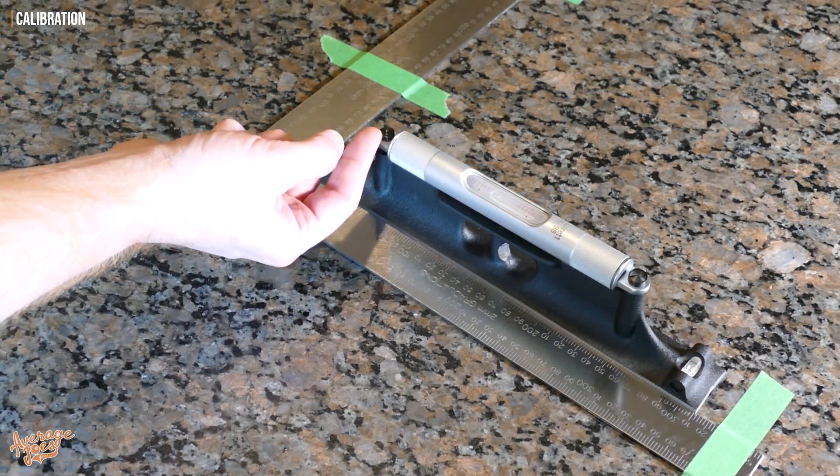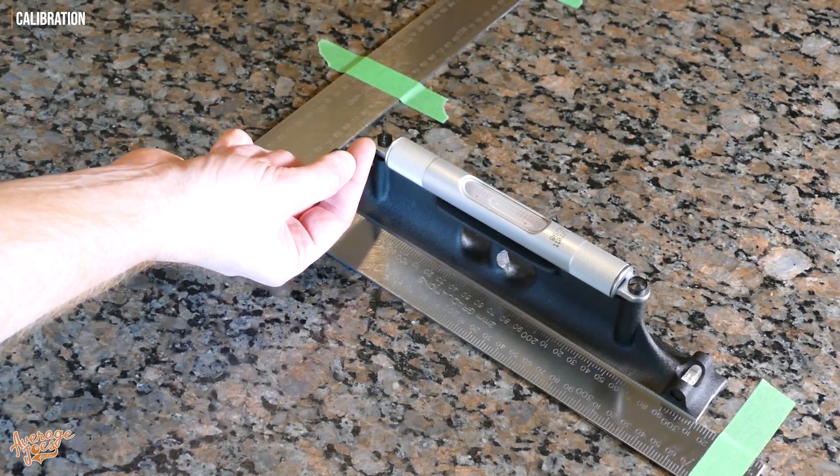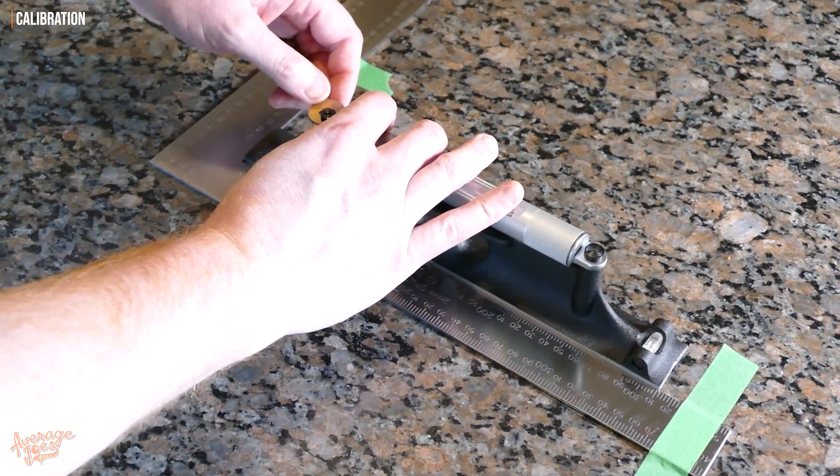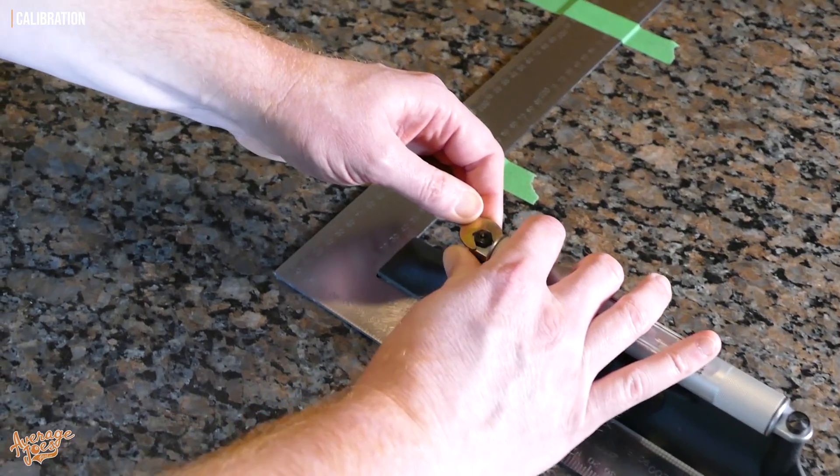So what we need to do is undo that, and then we're going to use the lower nut to raise it up and down to get it level. Then once we're happy, we'll lock it back in place with the upper nut. So we'll go ahead and get the upper nut undone.